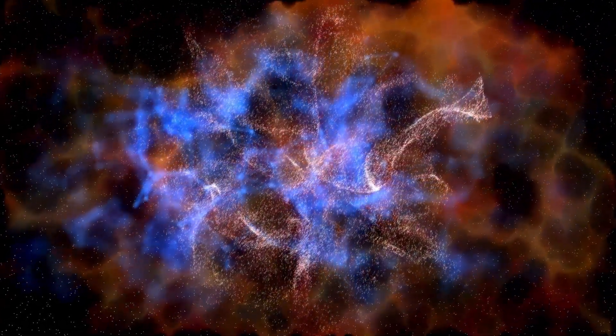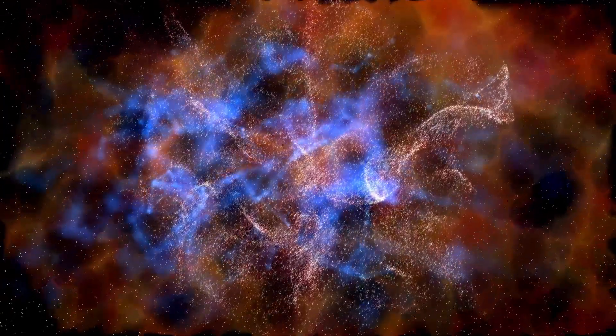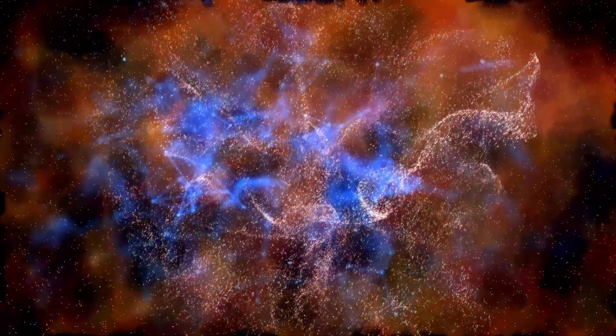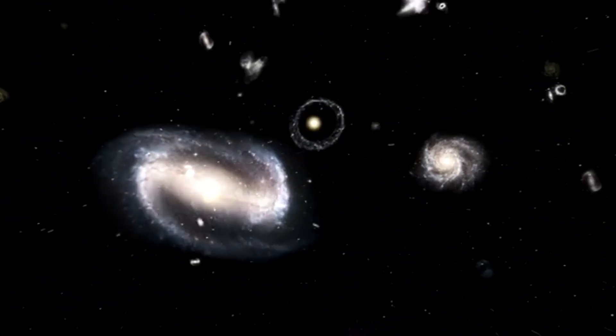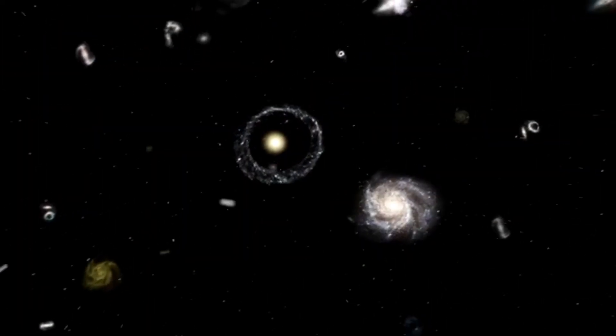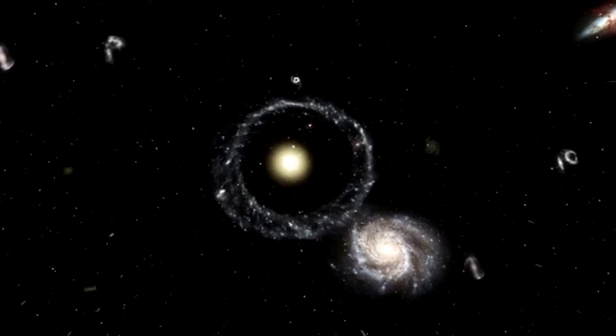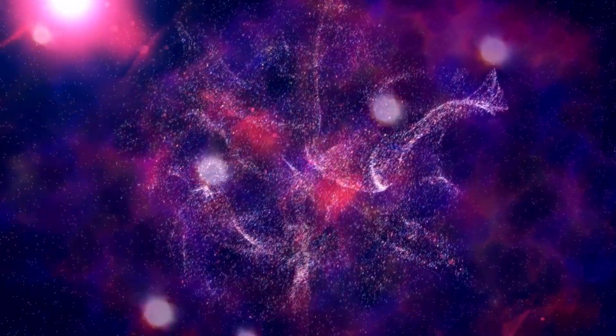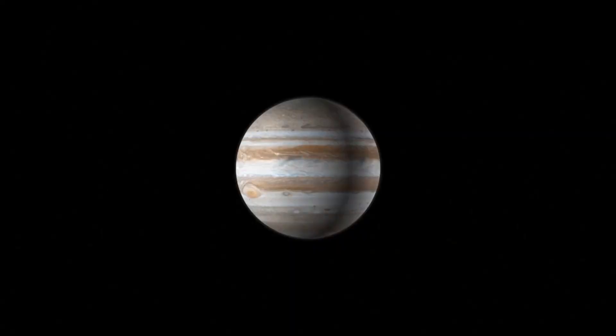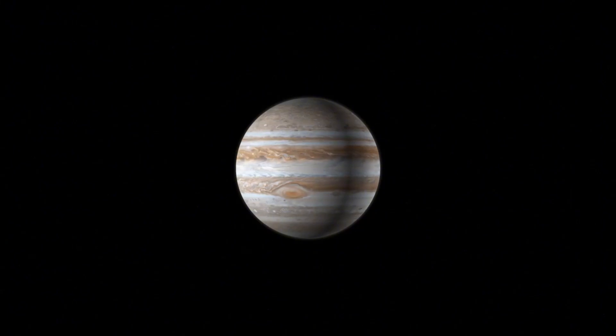A critical question arises: could Alpha Orionis pose a threat to Earth? If a supernova were to occur within just a few light-years of our planet, the effects would be catastrophic. A supernova can release an unprecedented amount of light, potentially outshining entire galaxies. This raises an important consideration. Even if Alpha Orionis is located at a considerable distance, the aftermath of its explosion could still have profound consequences.